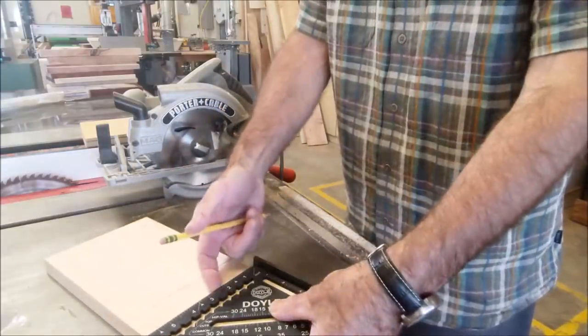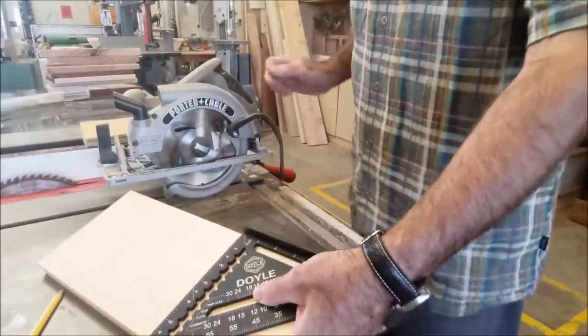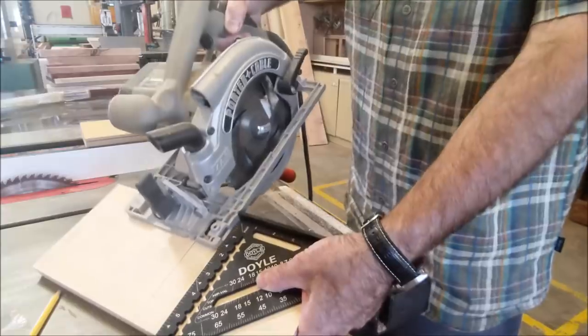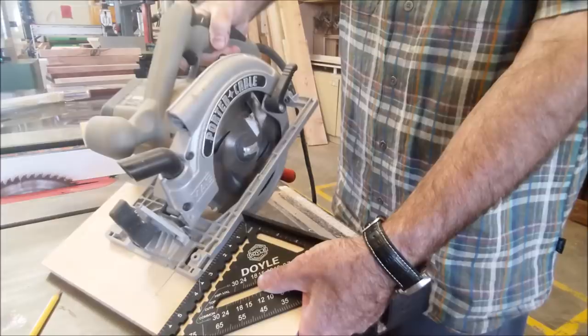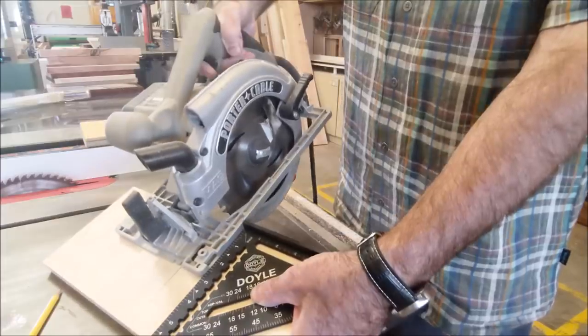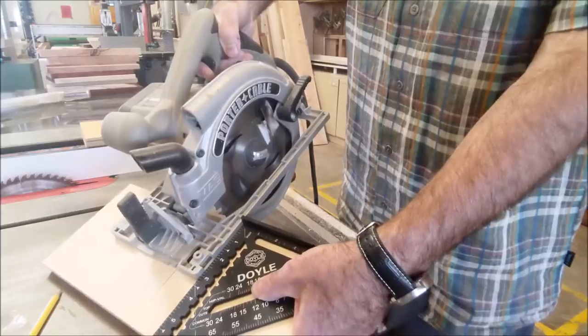The other thing you could use it for is a saw guide and how that works is you put your mark on there, you hold it on there with your left hand, and then you bring your saw right up to it, and then you run it down the board using that to stay perpendicular. We'll put the camera over my shoulder on my desk and I'll explain some of the math on this speed square.